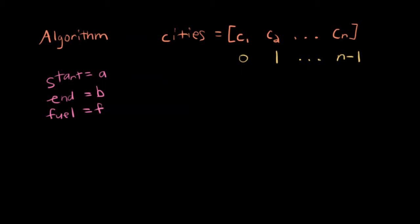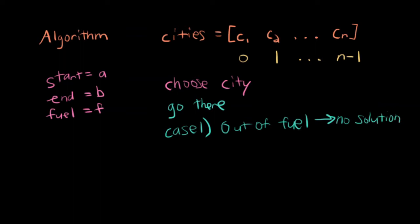Let's look at the algorithm a little more closely now, how this works in a more general case. If my cities are some c1 to cn, and my indices are from 0 to n minus 1, I have a start point of a, an end point of b, and I have f units of fuel. What I want to do is I want to choose a city. I don't really have much of an option for the first one. And then I'll go there. When I go there, I have to update my fuel. So there's two cases. Case 1, I'm out of fuel. If I'm out of fuel, that means there's no solution. That would mean I tried traveling from, say, 0 to 1, and in the process, my fuel became negative. If that happens, I can't go there. That's not a legal path.